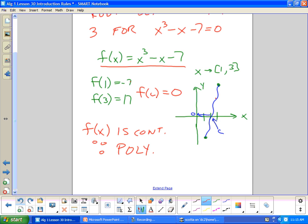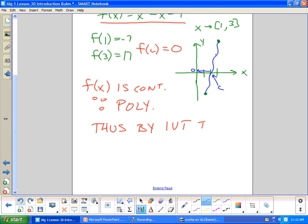Once we can make this statement and show this, we can just do a statement by IVT. Thus by IVT there exists some point f of c equals zero